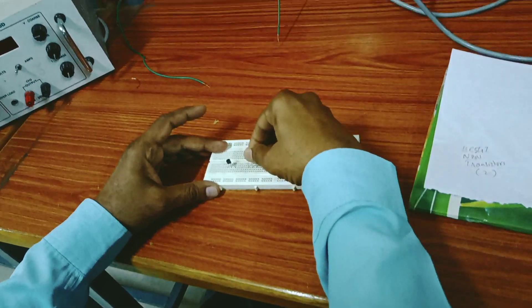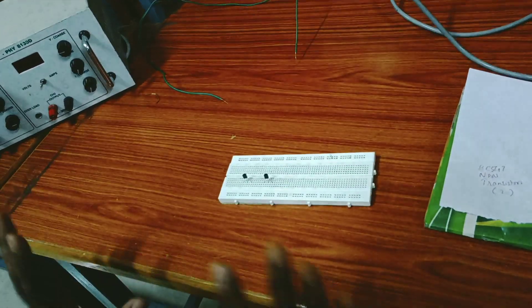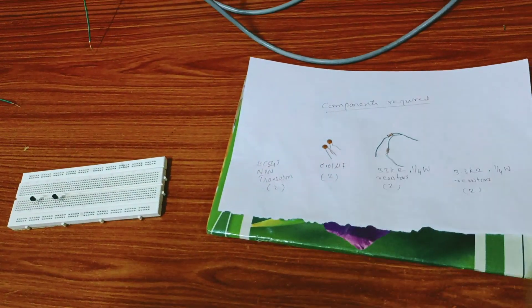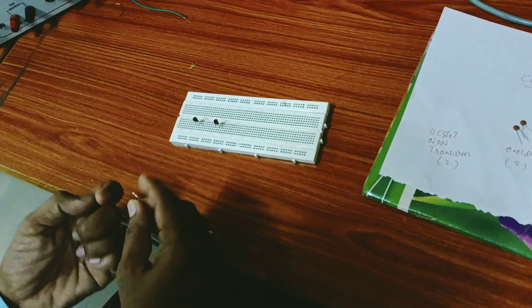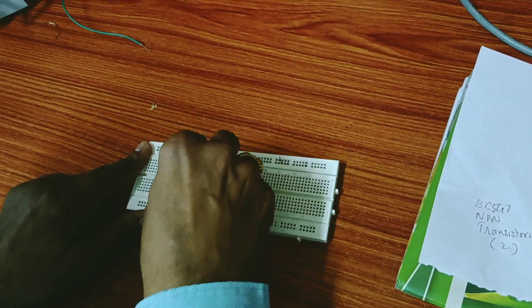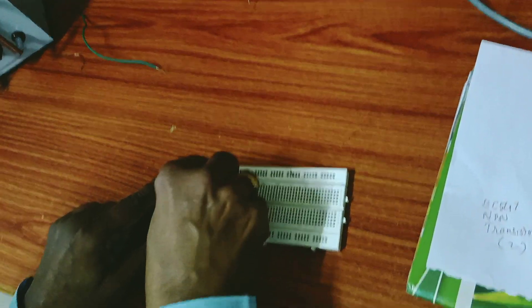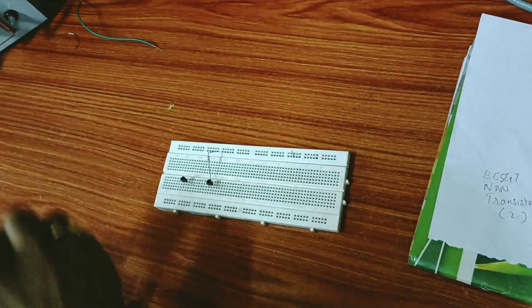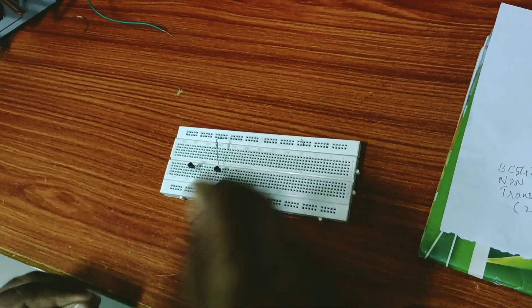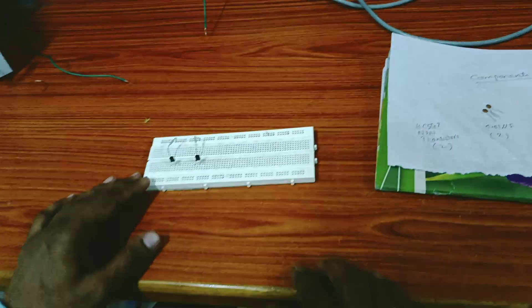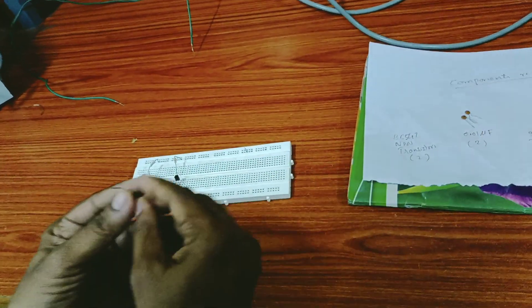To make the connections easy, insert two transistors like this. Then take two 3.3 kilohm resistances and connect from the collector terminal. Let us assume that the upper line is the positive where we give power supply connection. Similarly to the second transistor also.